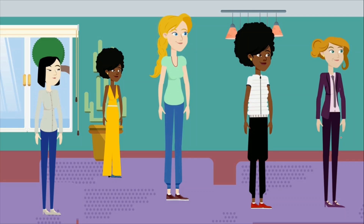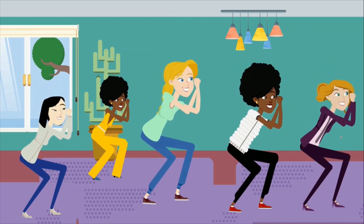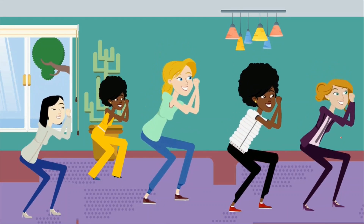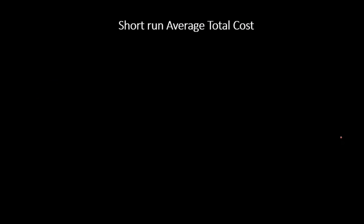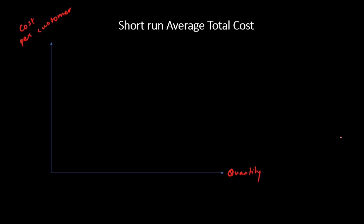Let's take an example. Suppose I run a small yoga center and, with social distancing norms in place, I can accommodate five members. Keeping the number small makes it easier to understand. With five members, I'm operating at full capacity and at the optimal point of production. For five customers, suppose my total cost is $50 per customer.